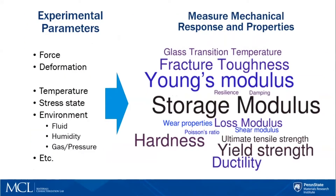With mechanical characterization, there are a variety of experimental parameters that are measured. Of course, you measure your force and your deformation. During your experiment, you could also measure or change the temperature, the stress state, the environment — for example, like the fluid the material is in, the humidity, the gas, or the pressure — along with other different experimental parameters.